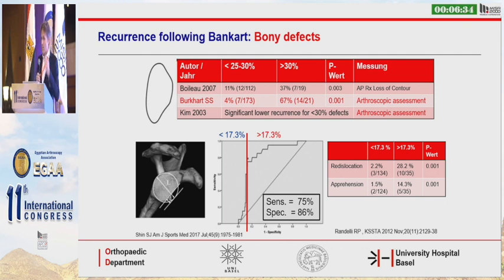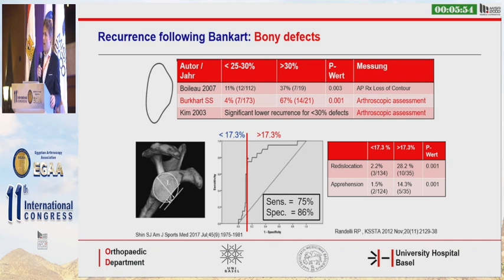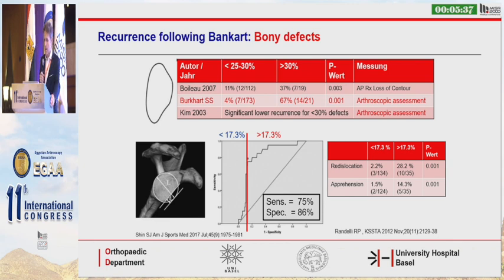The bony defect is the most relevant risk factor. The question is what extent of bony defect can we still accept for a Bankart repair. When we ask orthopedic surgeons, they usually say 20%, a number from the biomechanical study by Itoi published in 2000. There are not many studies looking at these numbers in real patients, and most did not use good measurements. Only the study by Shin, using 3D CT scan — which should be nowadays standard — showed that a bony defect of 17.3% is a very strong predictor of Bankart failure, with a sensitivity of about 75%.